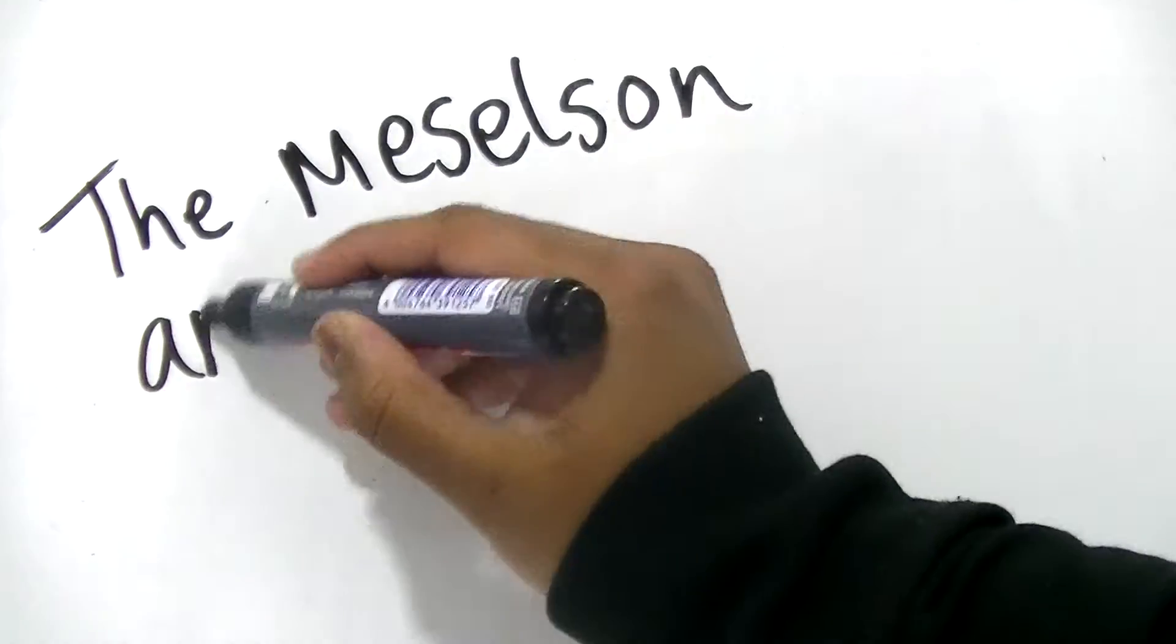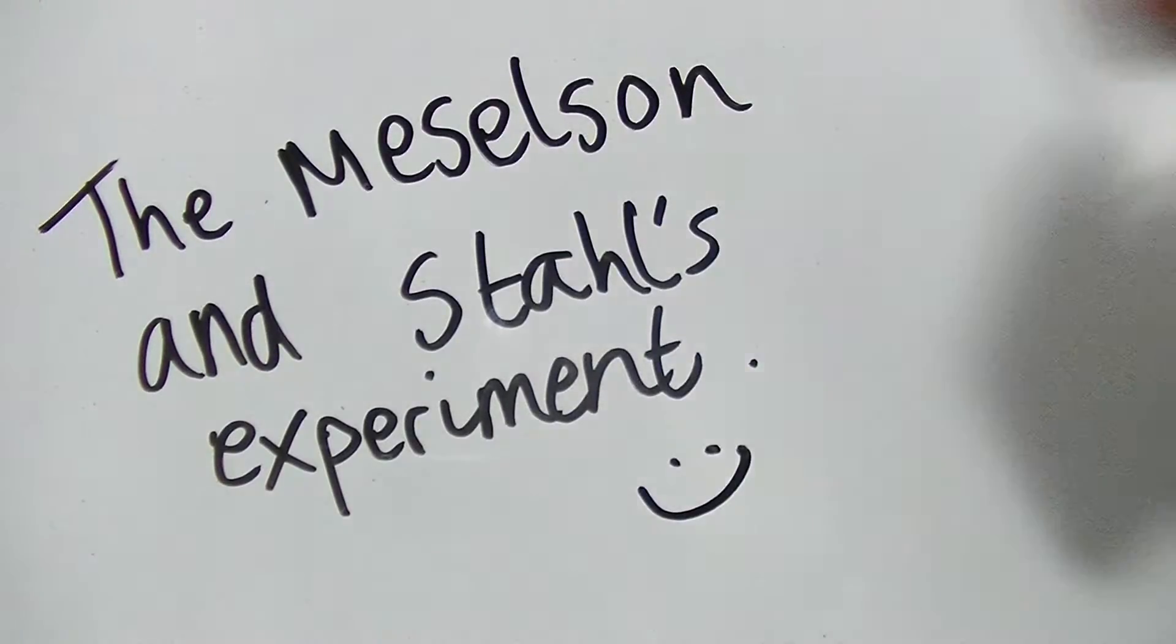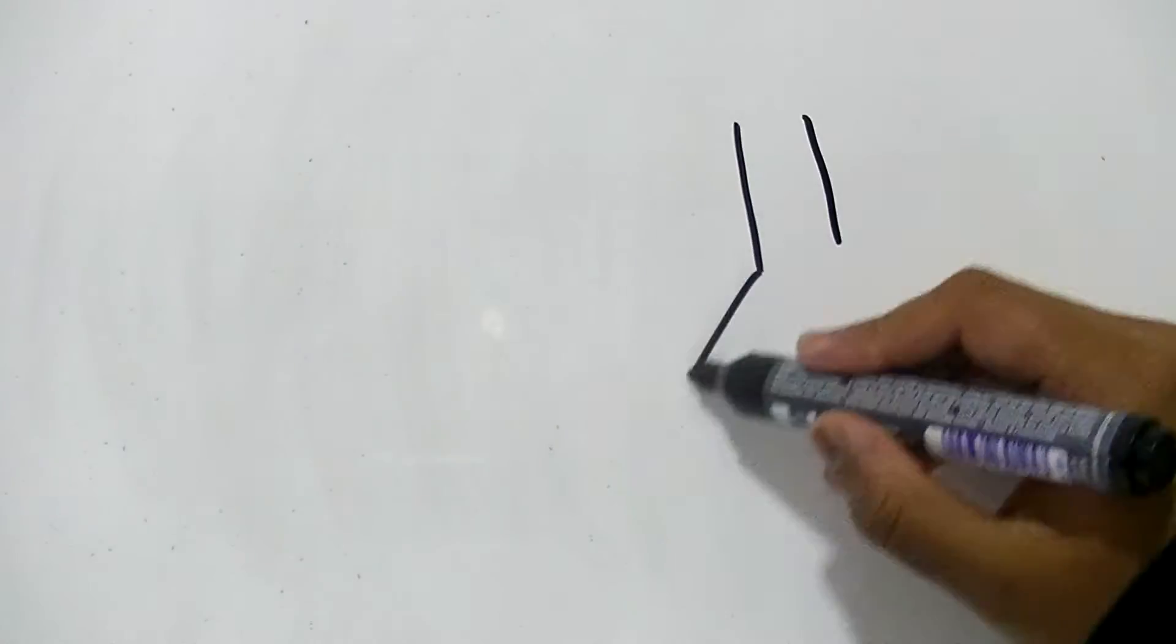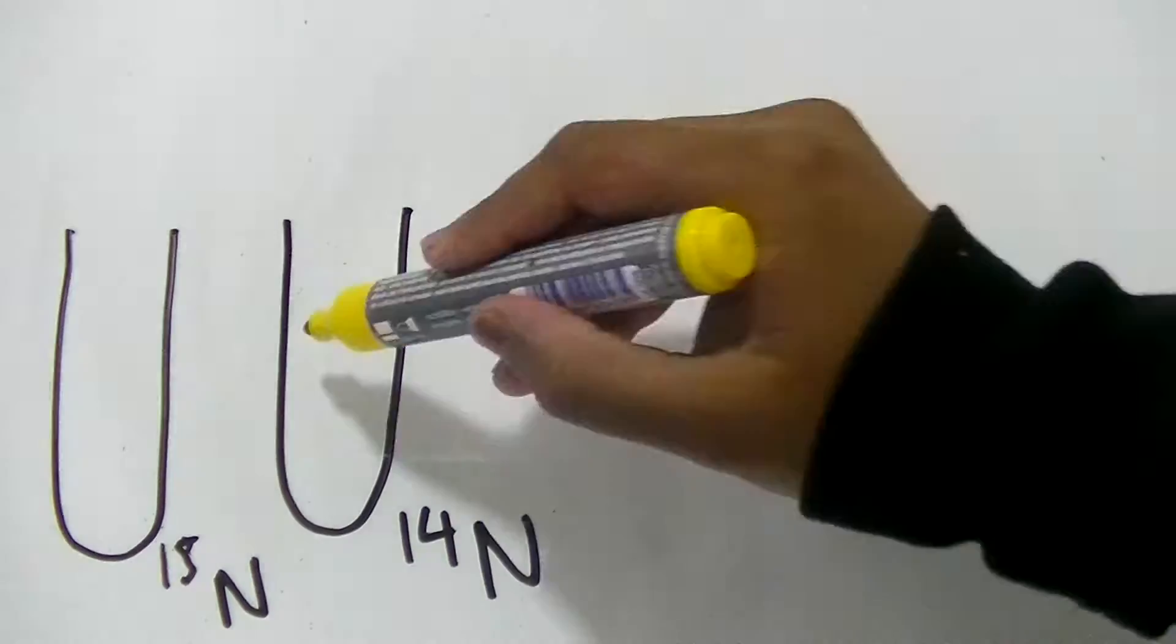Okay, so today we'll be looking at the Meselson and Stahl experiment. What they firstly did was they got a sample of E. coli, which is a bacteria, and they grew it in both heavy nitrogen, which was 15N, and light nitrogen, which was 14N.